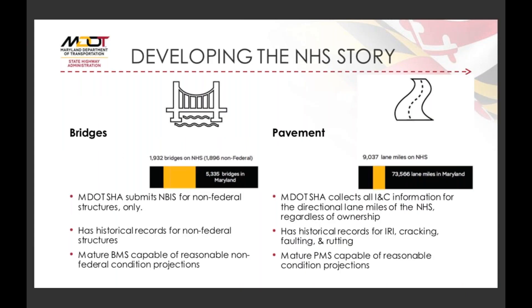Diving deeper into the NHS story, similar to Caltrans, MDOT SHA submits for all non-federal structures, so we have really good data on all non-federal structures on the NHS. We did struggle collecting good federal structure information, but our Office of Materials Technology collects all inventory and condition information for directional lane miles of the NHS regardless of ownership. We had amazing historical records for pavement on all four metrics, so our targets and projections in the TAMP used all four criteria.